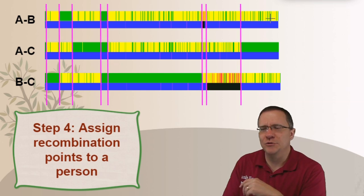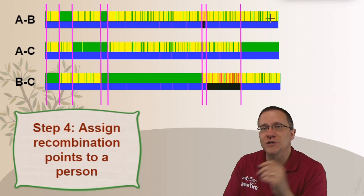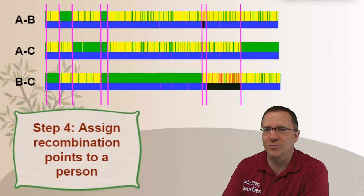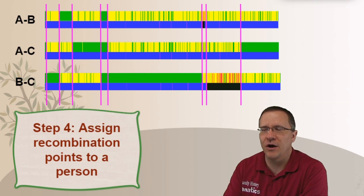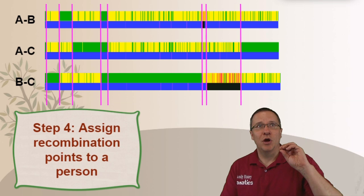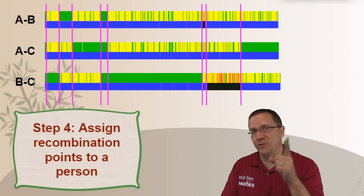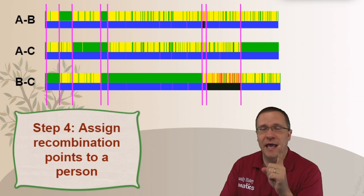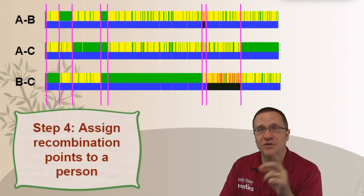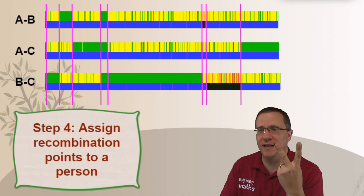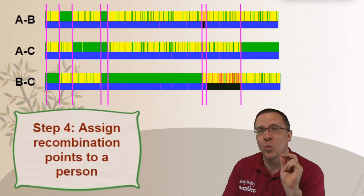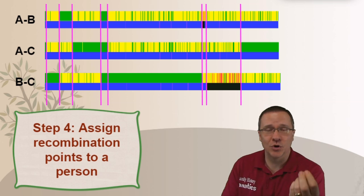So that leads us now to step number four is we want to assign the recombination points to a certain person. Now how do we assign those recombination points? Well what we need to look at is we need to look at where they are happening. And so a recombination point is going to affect one person at a time. But because we're comparing that person with another person it's going to affect at least two lines at the same time. So what we're looking is which lines are changing and what's the common person between those.